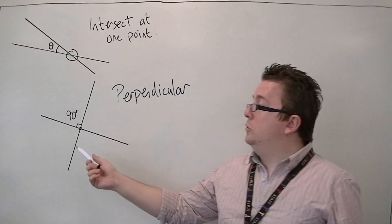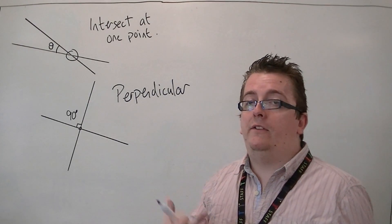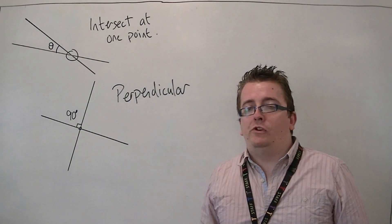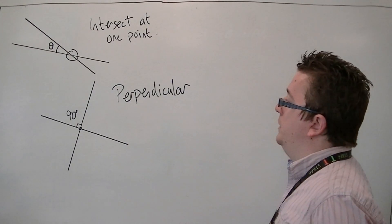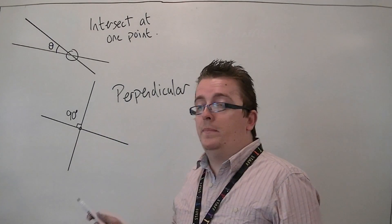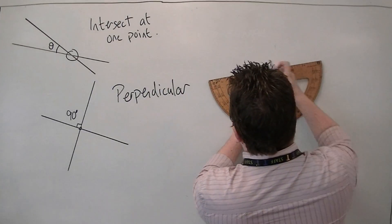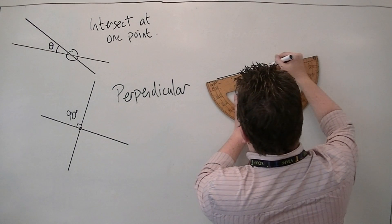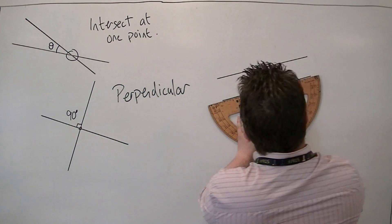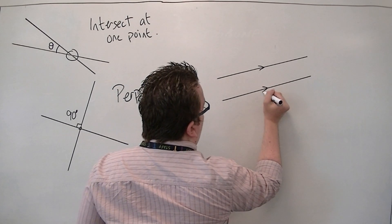When they are perpendicular, the gradients have what is called a negative reciprocal relationship — we're going to look at that in the next video. The other possibility is that the two lines just don't meet. In that case, you could draw them like train tracks, effectively, and you would call them parallel.